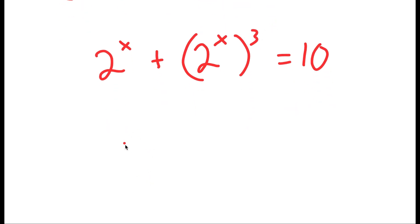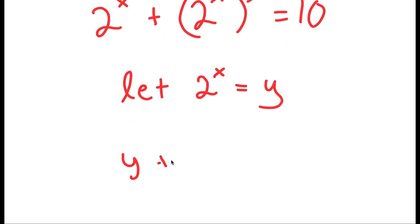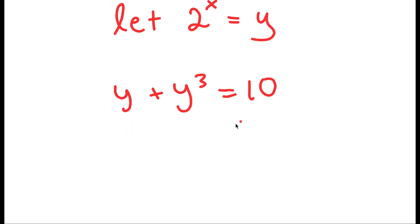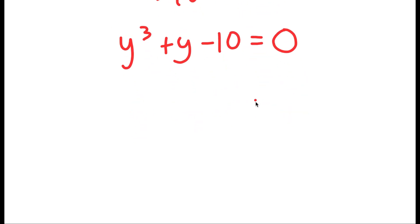Now from here, I'm going to let 2 to the power of x equal to the variable y. So now I get y plus y to the power of 3 is equal to 10. And if I subtract 10 on both sides, I get y to the power of 3 plus y minus 10 is equal to 0.